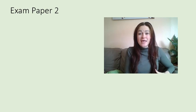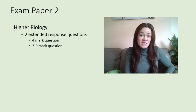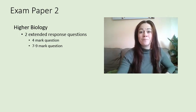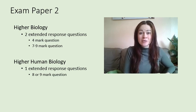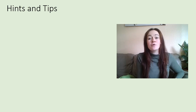The extended response questions appear in the second paper — paper one is your multiple choice paper and the second paper is the short answer questions, though the extended response is not really a short answer. For Higher Biology you get two extended response questions: one is about four marks and the last one at the end of the paper can be anywhere from seven to nine marks. For Higher Human you have one extended response question, usually eight or nine marks. The tips I'm giving you today apply to both the shorter and longer questions. I'll go through hints and tips, one big warning, then an example with the mark scheme.